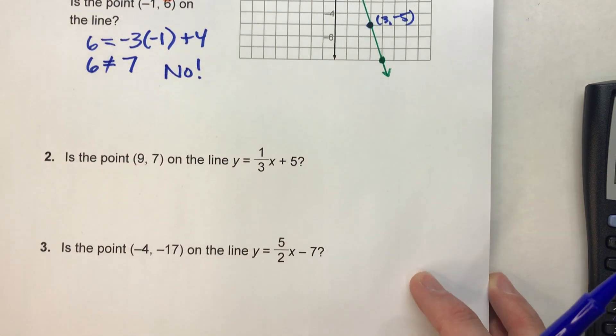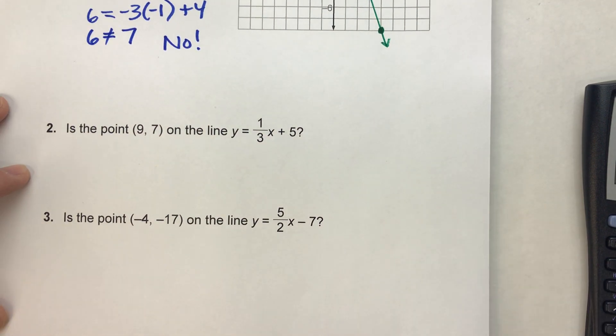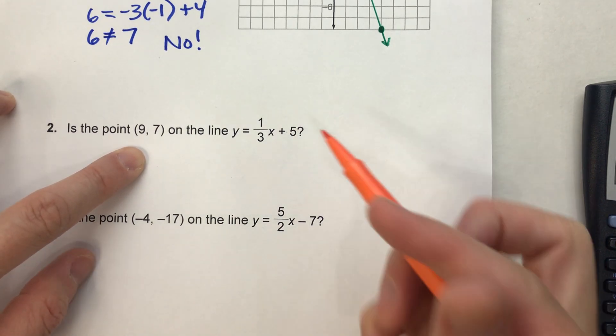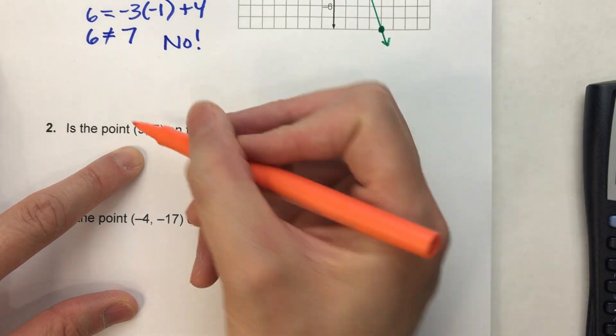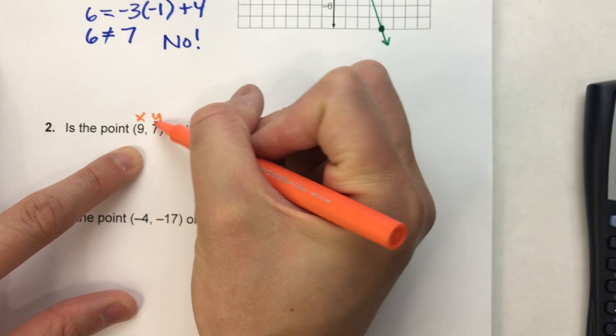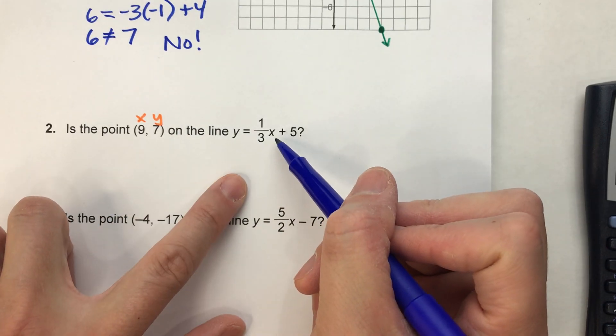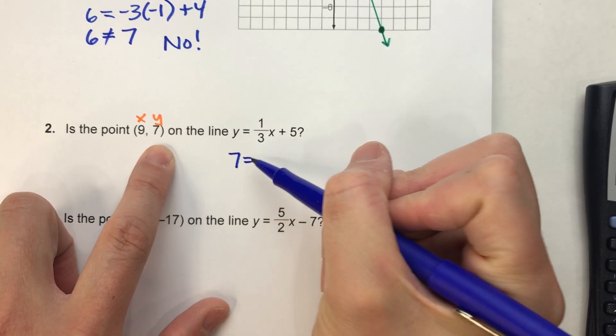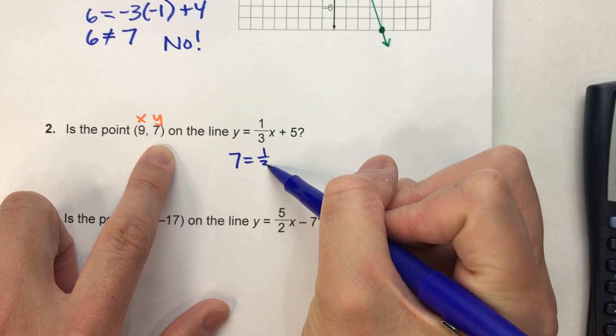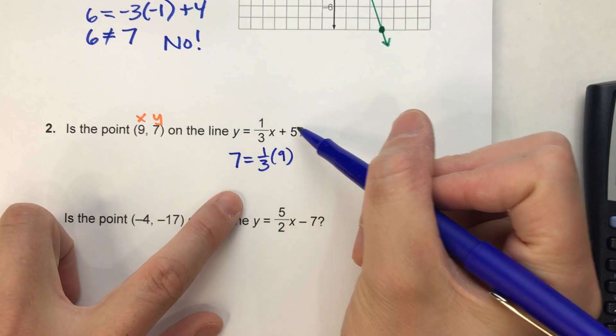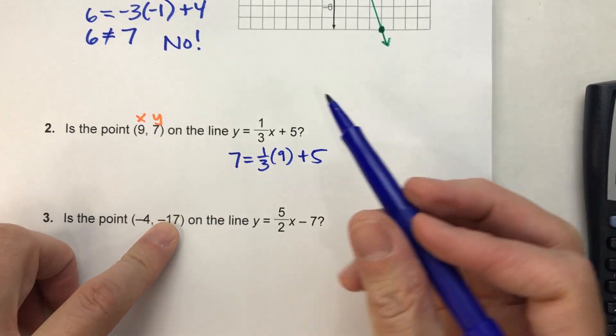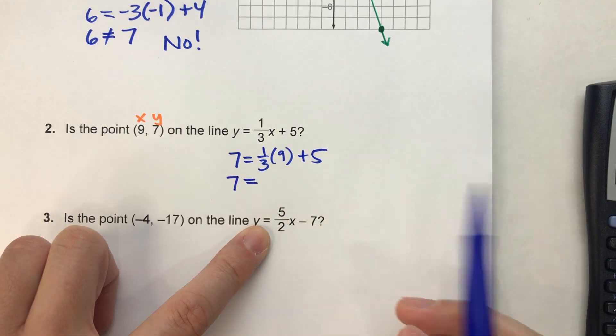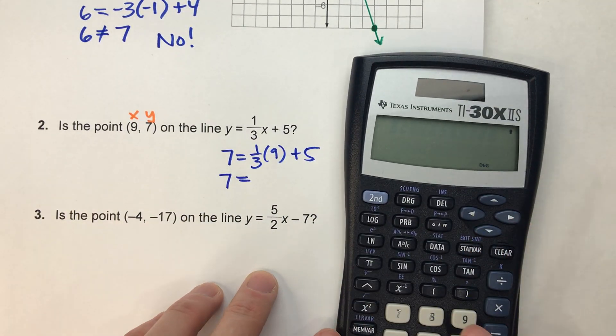This time, purely with algebra. So, again, is the point (9, 7) on the line y = (1/3)x + 5? Again, this is my x and this is my y. All I'm going to do is put them into the equation and find out. So, y equals 7 equals (1/3) times x, (1/3) times 9 plus 5. If 7 really does equal all this stuff, then we know the point is on the line. Let's find out.